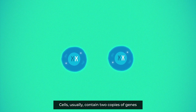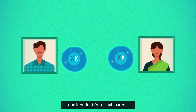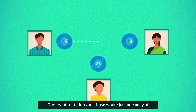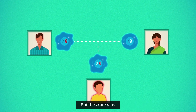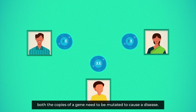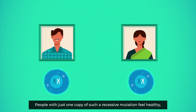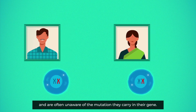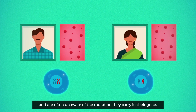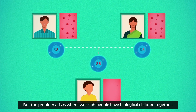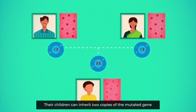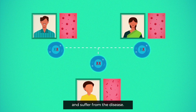Cells usually contain two copies of genes, one inherited from each parent. Dominant mutations are those where just one copy of a mutated gene is sufficient to cause a disease, but these are rare. In case of recessive mutations, both copies of a gene need to be mutated to cause a disease. People with just one copy of such a recessive mutation feel healthy and are often unaware of the mutation they carry in their gene.